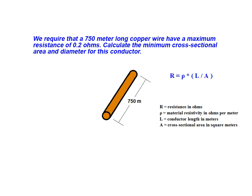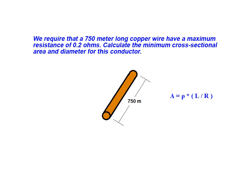To begin our solution, we manipulate the general conductor resistance relationship to solve for cross-sectional area. We can then calculate the cross-sectional area of the wire by substituting the known quantities in the example. We arrive at a resulting cross-sectional area of 0.0000645 meters squared.